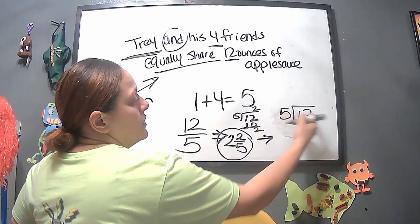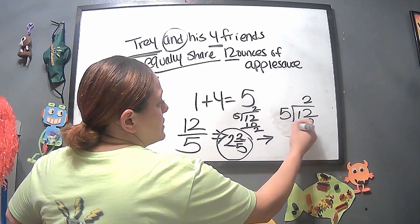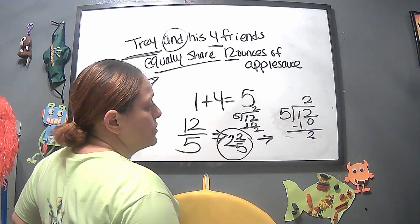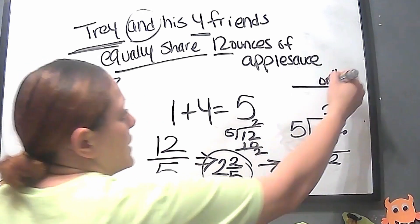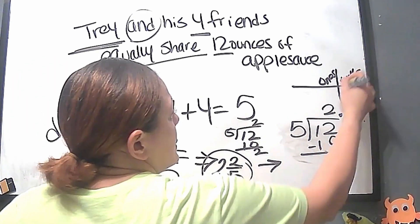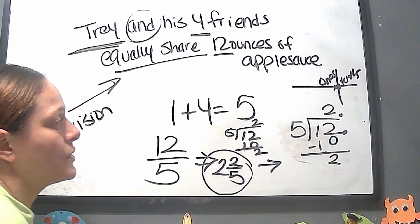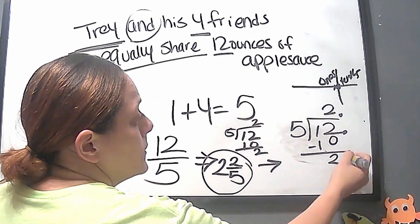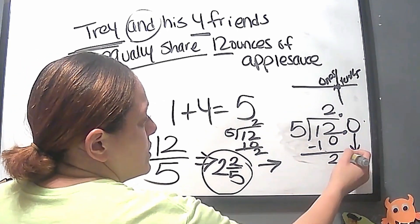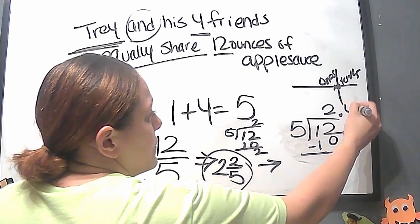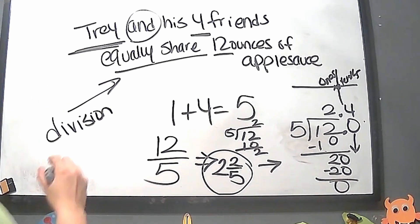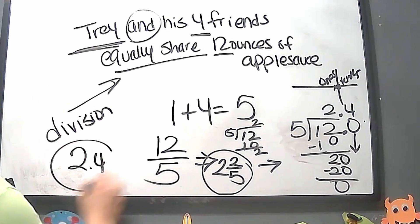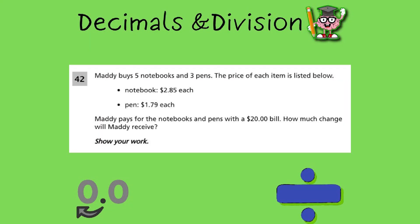If they want a decimal answer: 5 into 12, five goes in two times leaving a remainder of two. Add a decimal point and bring down a zero — now 5 goes into 20 four times exactly, leaving zero remainder. So the decimal answer is 2.4 ounces per person.